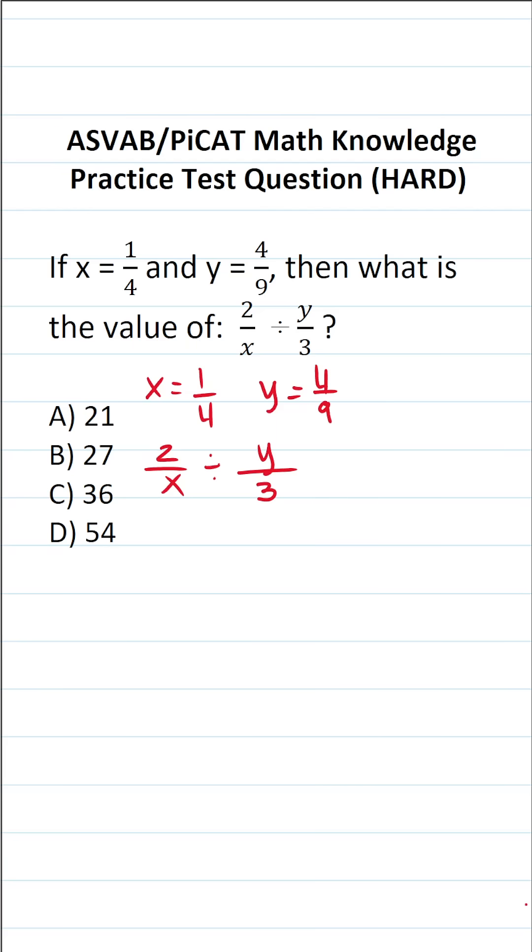Since we're evaluating this expression when x equals 1/4 and y equals 4/9, the first thing you have to do is plug in 1/4 for x and 4/9 for y respectively. Let's go ahead and do that. This becomes 2 over 1/4 divided by 4/9 over 3.